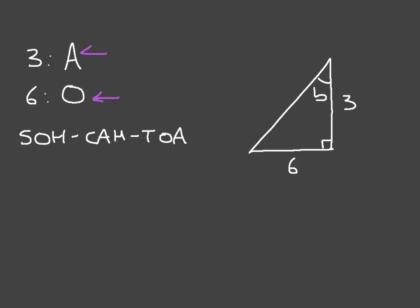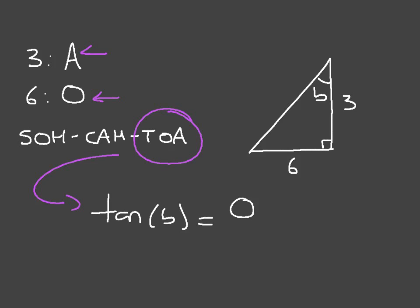Very quickly we see that the only one to have both O and A is TOA. This tells us that tan — T stands for tan — the tan of the angle, which in this case is B, is equal to the opposite divided by the adjacent. Here the opposite is 6 and the adjacent is 3, and 6 divided by 3 is 2.